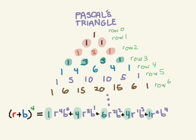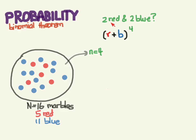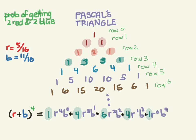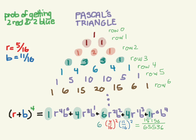Remember the question: what is the probability of getting two reds and two blues? That answer is contained right inside this formula. Two reds and two blues corresponds to the r² b² term. Plugging in: 6 × (5/16)² × (11/16)² gives us 18,150 over 65,536 — the exact same answer as before.